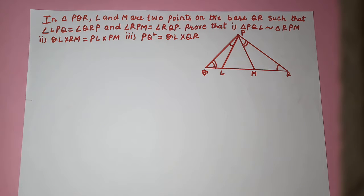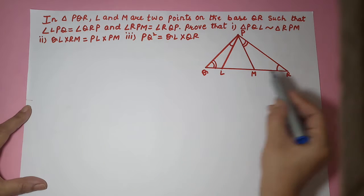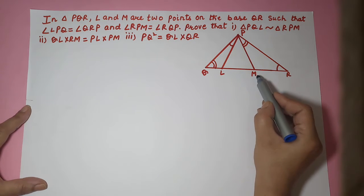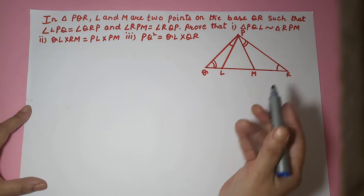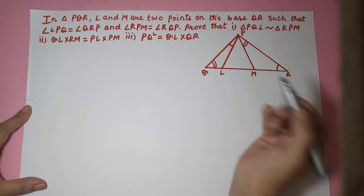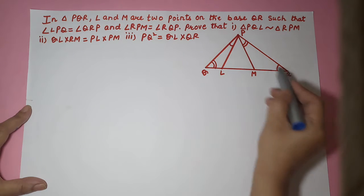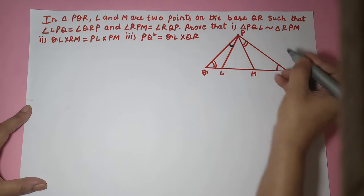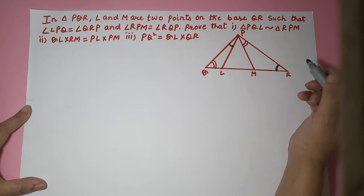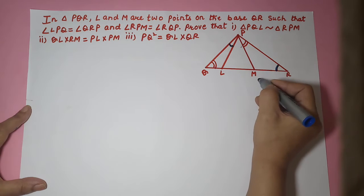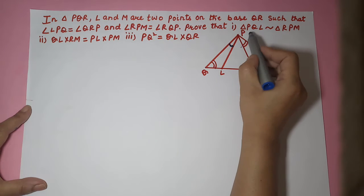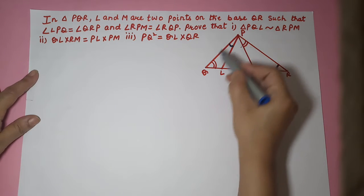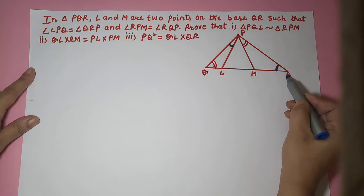We are continuing with the similarity of triangles. The question is that in triangle PQR, L and M are two points on the base QR, such that angle LPQ is equal to angle QRP, and angle RPM is equal to angle RQP. You have to prove that triangle PQL is similar to triangle RPM.